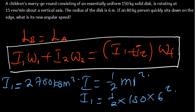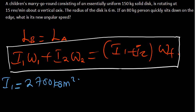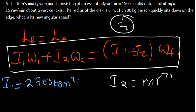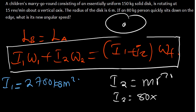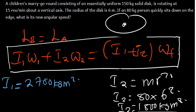We can also find the inertia of the person. The inertia of the person is given by mR squared — not half, because the mass is concentrated at one point. The mass of the person is 80 kg, and the radius is the same as the disk's radius, 6 meters, because the person is standing on the edge of the disk. So inertia two equals 80 times 6 squared, which gives 1,800 kg·m².